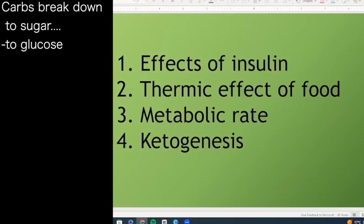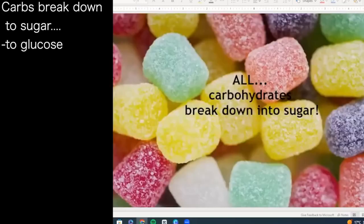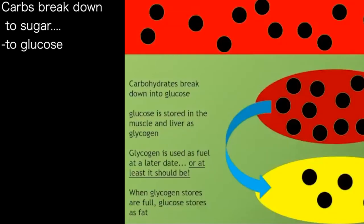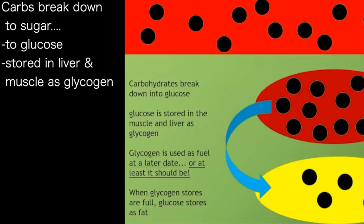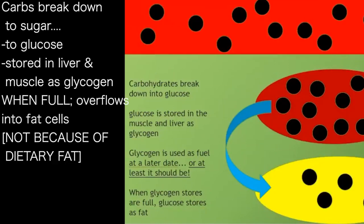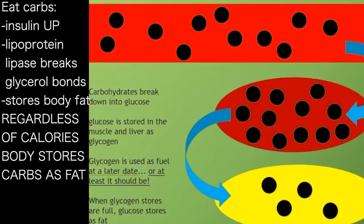We need to understand that all carbs break down into sugar — regardless of the source, they all break down into sugar, which breaks down into glucose. That glucose is then stored in the liver and muscle as glycogen, but when these stores are full it overflows and stores as fat. This is how we typically store fat — not through overconsumption of dietary fat, but overconsumption of carbohydrate in the form of glucose.